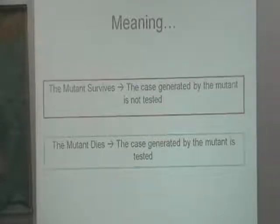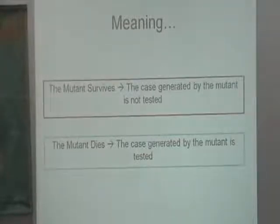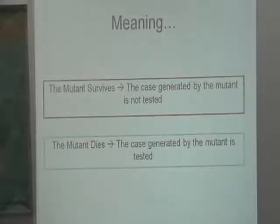Do you apply the mutants all at once and run the tests? No, every time it's one at a time. You run all the tests per mutant: create a mutant, run all the tests, create another mutant, run all the tests. Just small changes to your code, and then you have to run all the tests. You can start to realize this is a brute force technique.